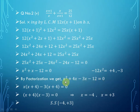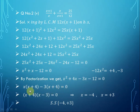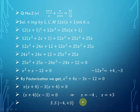Taking x as common from the first two terms gives x(x plus 4), and taking minus 3 as common from the next two terms gives minus 3(x plus 4) equals 0. On the left-hand side we get two factors: (x plus 4)(x minus 3) equals 0. Setting each factor equal to zero, x equals minus 4 from the first factor and x equals plus 3 from the second. The solution set is {minus 4, 3}.